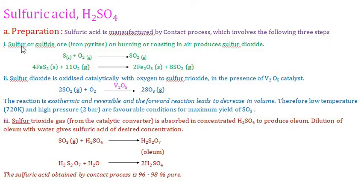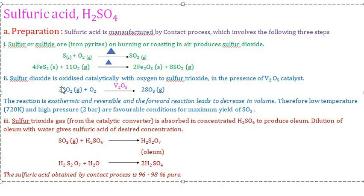Step 1: Sulfur or sulfide ores are converted to sulfur dioxide. Sulfur burns in air to form SO2, and iron pyrite reacts with eleven oxygen molecules and heat to form ferric oxide (Fe2O3) and sulfur dioxide. Step 2: SO2 is oxidized catalytically with oxygen to form sulfur trioxide (SO3) in the presence of V2O5 as catalyst.